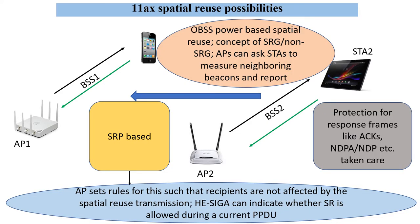There are two possibilities of spatial reuse. The first one I covered in part one is the power based spatial reuse where anybody who wants to do spatial reuse will measure the power of the other BSS and accordingly apply some thresholds and transmit power control. Today, I want to focus on SRP based spatial reuse where it is slightly different, not necessarily using power based threshold. Remember that you can have both being operational at the same time and a lot of configuration possibilities to limit their usage.